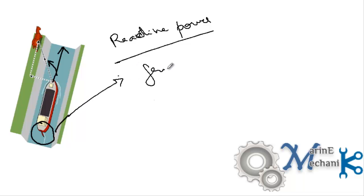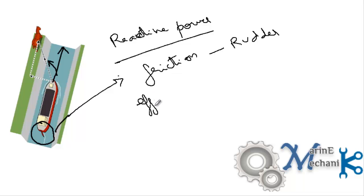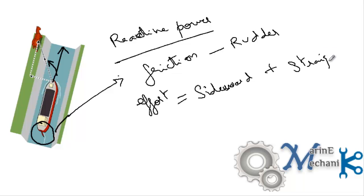So there are two losses: one is friction due to the rudder, and the second is the sideward movement. Even though the power applied by the horse to pull the boat is the same whether the boat is behind it or at the side, the full effort is not completely utilized — the effort is divided into a sideward reaction plus the straight movement.